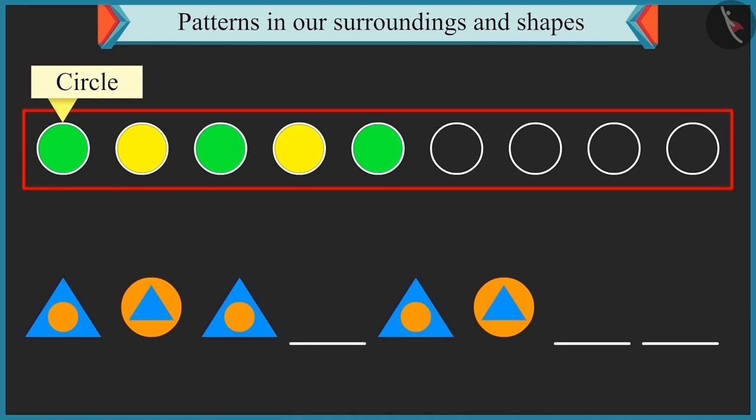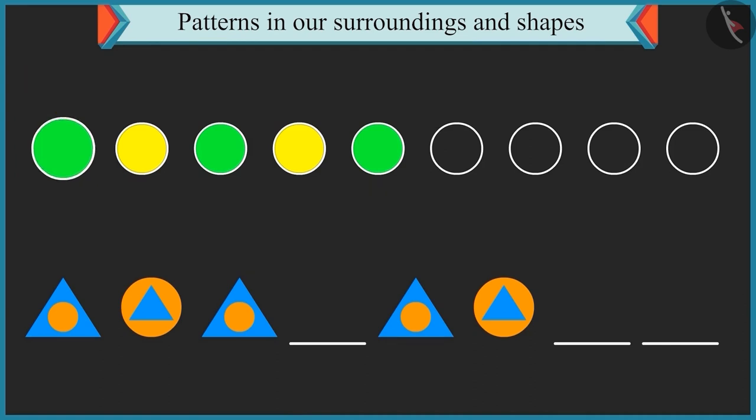Look carefully. The circles are filled with colours and these colours are repeated in a particular order. First circle is filled with green colour. The second circle is filled with yellow colour. And the third circle is filled with green colour. Yes, the yellow and green colours are repeated in the next circles.